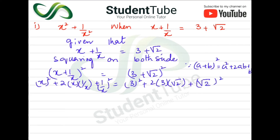On the left side, x squared plus 2 plus 1 upon x squared equals — on the right side — 9, plus 6 under root 2, plus 2. The square root cancels out when squared, giving us 2.